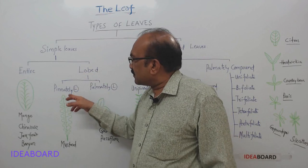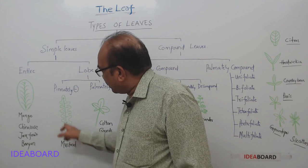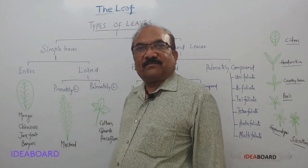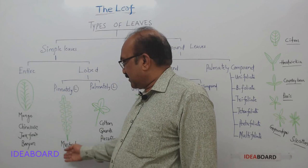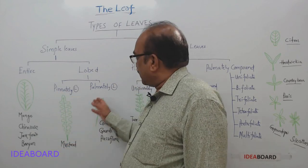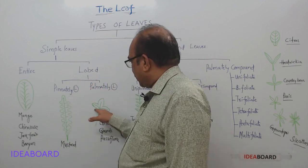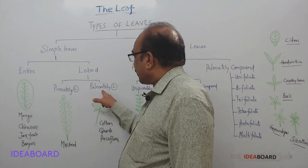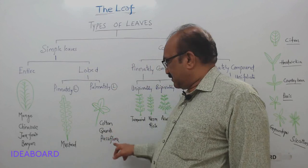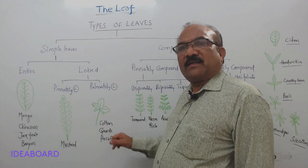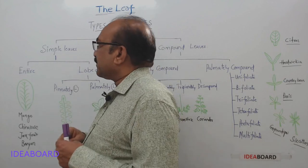When the lamina is dissected but the dissection does not reach the midrib, such leaves are called simple lobed leaves. Based on the arrangement of the lobes: if lobes are arranged on either side of the midrib like a feather, it is called a pinnately lobed leaf — example is mustard. If lobes are arranged like a palm, it is called palmately lobed — examples are cotton, gourds, and Passiflora.